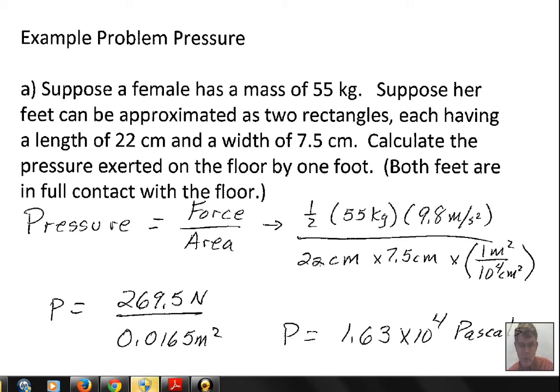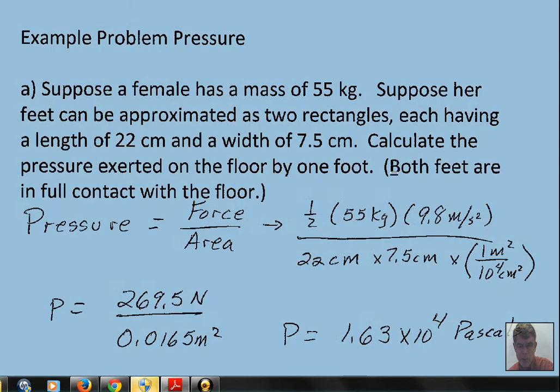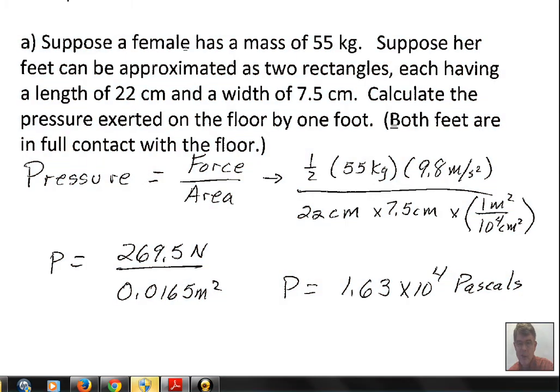So you should check with your own calculator. But for the half of the weight in newtons for the person, I have 269.5 newtons. The area in square meters, 0.0165 square meters, giving us then a pressure of 1.63 times 10 to the fourth pascals.